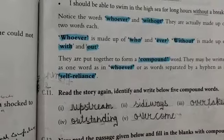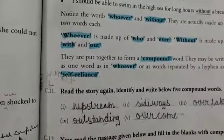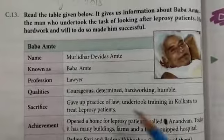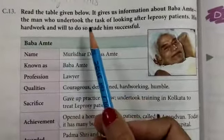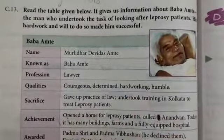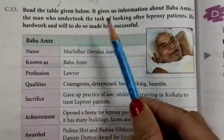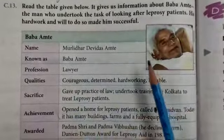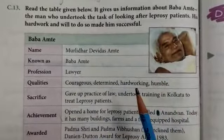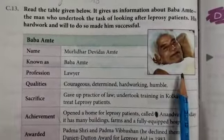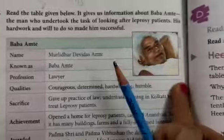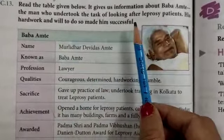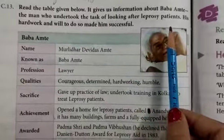Now I will explain the next exercise which is given on page number 74. Read the table given below. It gives us information about Baba Amte — the man who undertook the task of looking after leprosy patients.